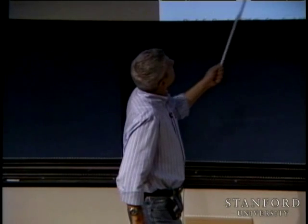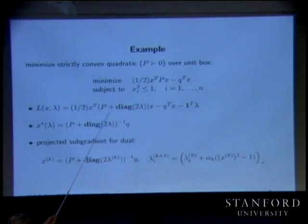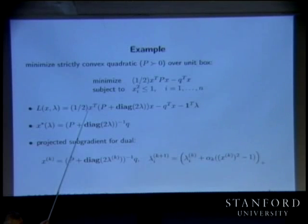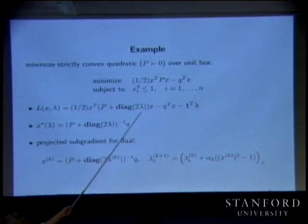Here's the Lagrangian. It is positive definite — a positive definite quadratic function for each value of lambda, because you don't even need the lambda part for it to be positive definite.